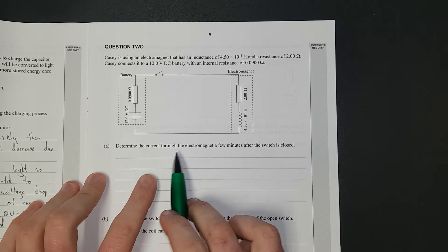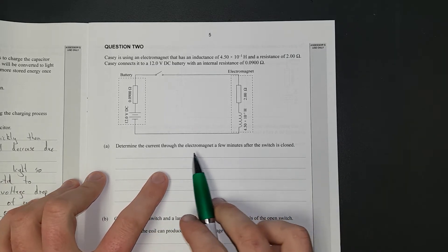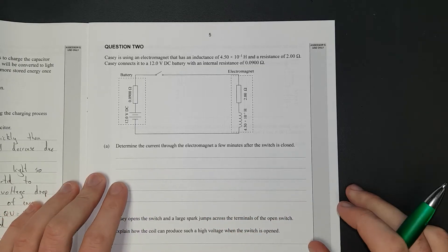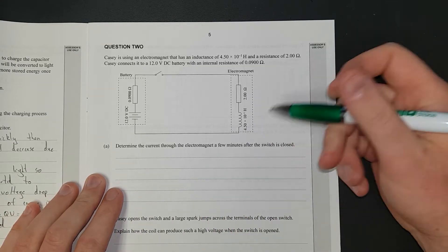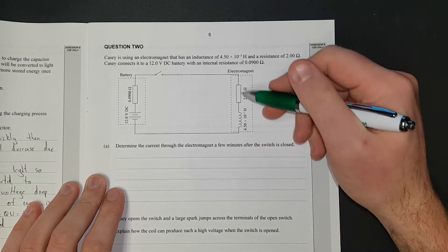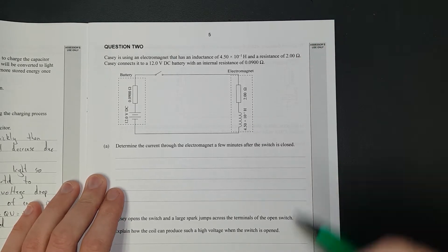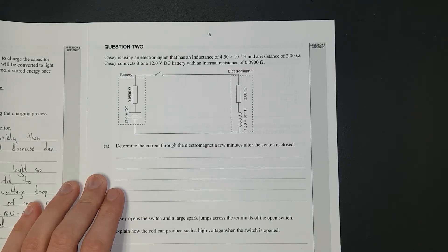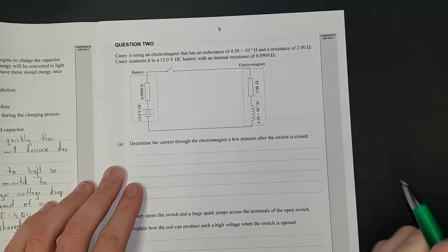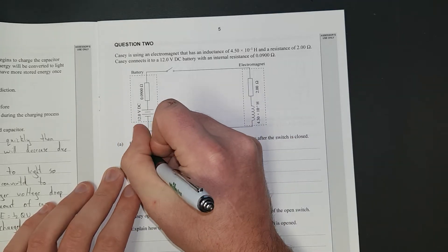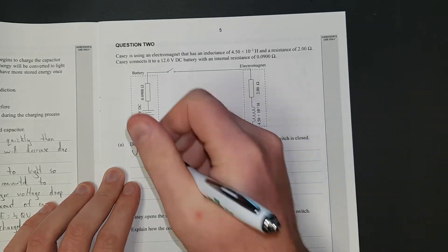Determine the current through the electromagnet a few minutes after the switch is closed. This assumes you know what these inductors do or electromagnets. After a while it just acts like a piece of wire. They only do stuff when the current is changing. They rely on changing magnetic fields or work by changing magnetic fields.